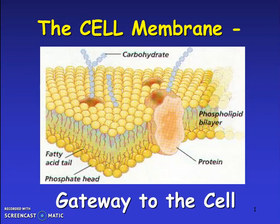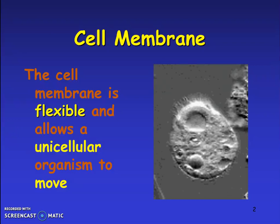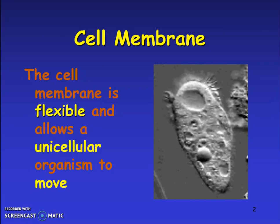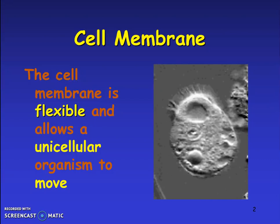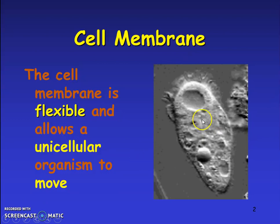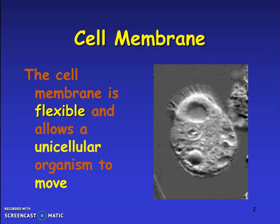The cell membrane is also called the gateway to the cell. It is found in both prokaryotic and eukaryotic cells. The cell membrane not only regulates what comes in and what goes out, but it is also flexible and allows some unicellular organisms like bacteria to move — as you can see in this picture of a unicellular cell with flagella.